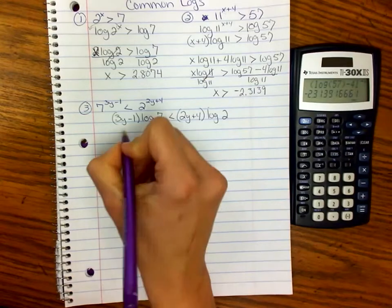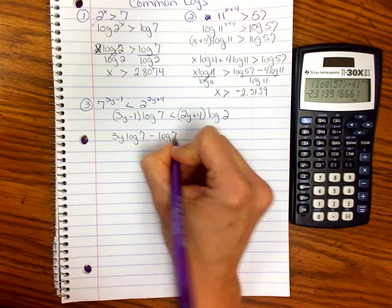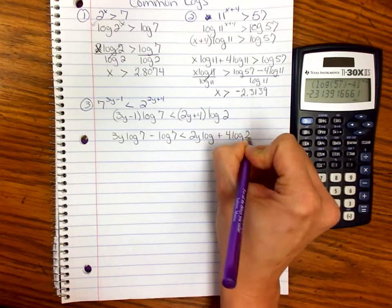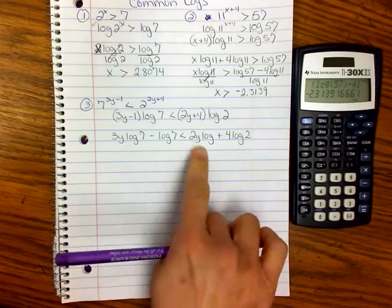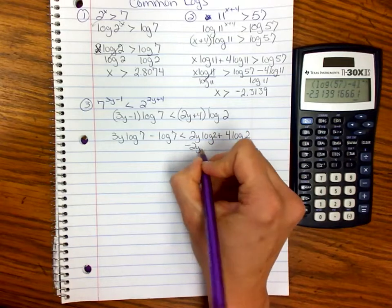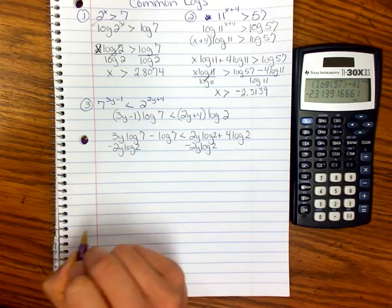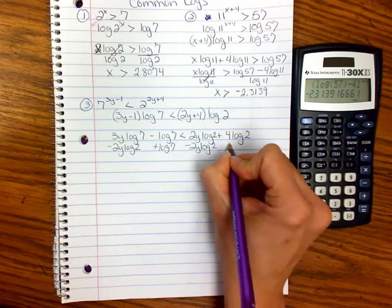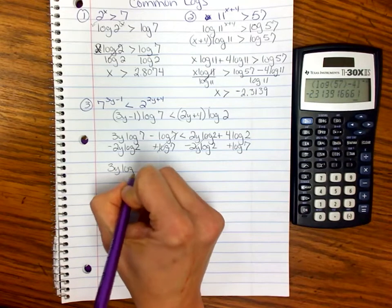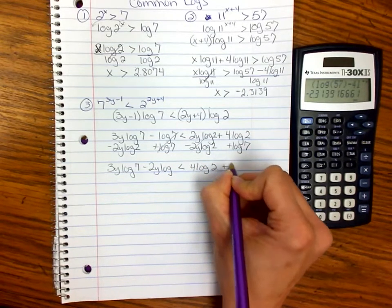Then we have to use our distributive property. So 3y·log(7) - log(7) when we distribute the left side. And 2y·log(2) + 4·log(2) on the right side. We need to get all the y's on one side. Our goal is to solve for y. We have a y on the left and the right. So I need to subtract 2y·log(2) from both sides, and I need to add log(7) to both sides. Then we get 3y·log(7) - 2y·log(2) < 4·log(2) + log(7).